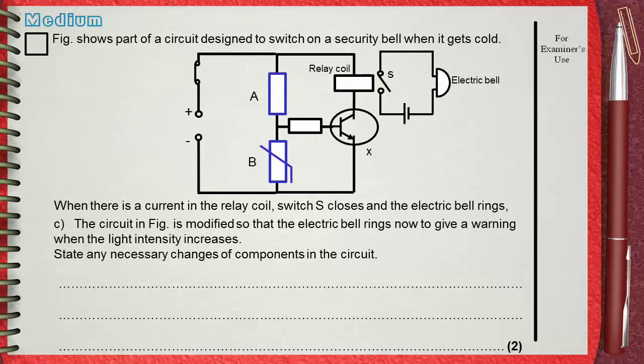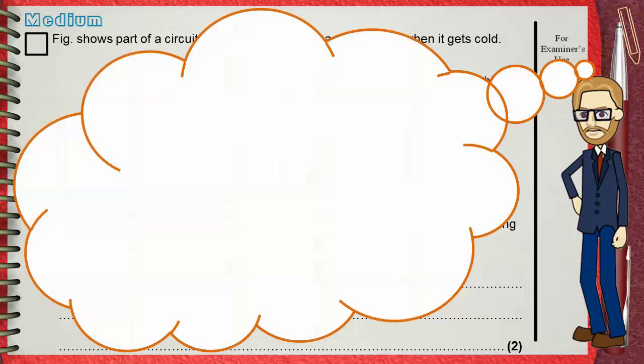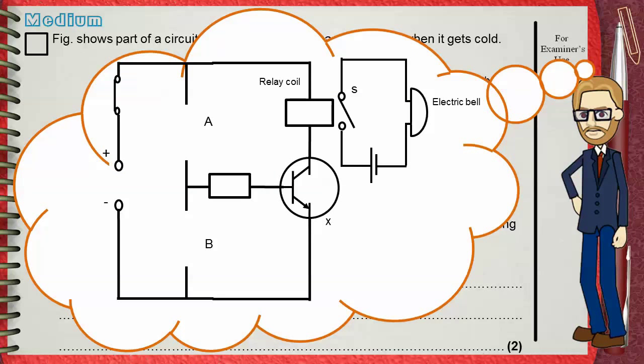Let's think again about these types of circuits that are based on transistors and are used as alarms. Now you don't need a heat sensor. Instead, you need a light sensor.